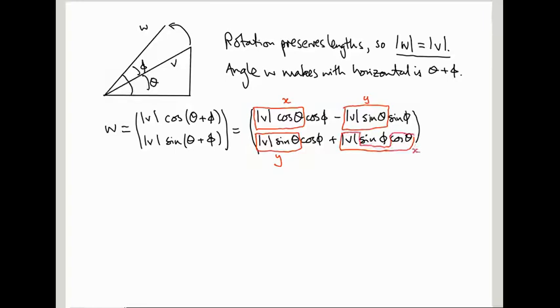Okay, so rewriting this, we have X cos phi minus Y sine phi, and then I'm just going to switch the order of these, this is going to be X sine phi plus Y cos phi.